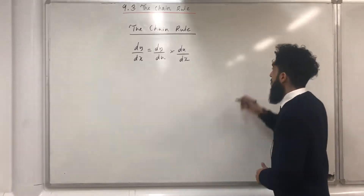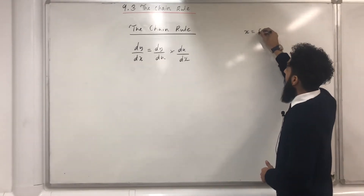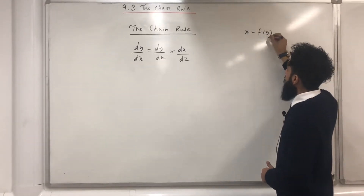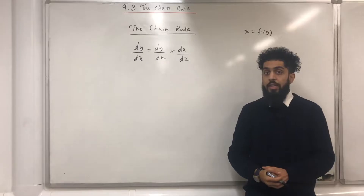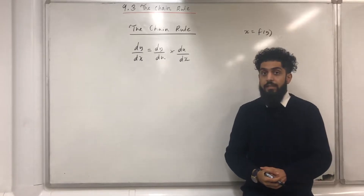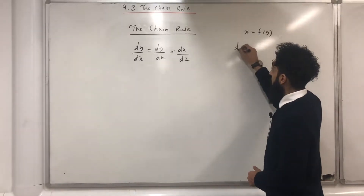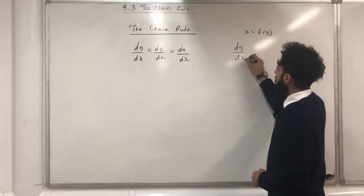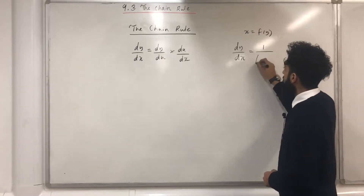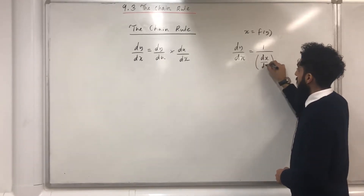Let's have a look at x as a function of y. To work out dy over dx, what you need to do is as follows: dy over dx is equal to 1 over dx over dy.